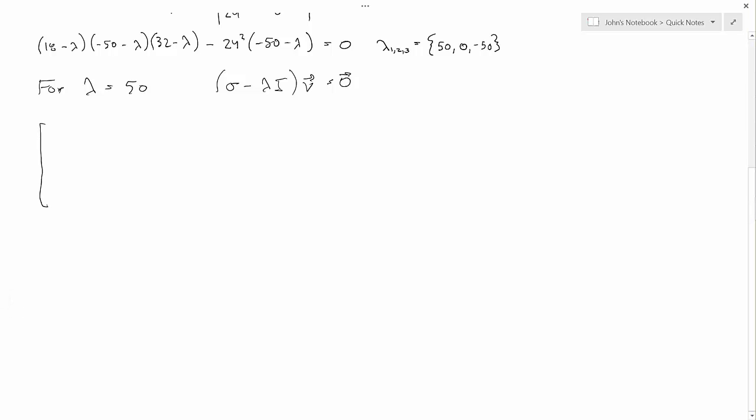We have 18 minus 50, zero, 24, zero, minus 100, zero, 24, zero, 32 minus 50. That's equal to minus 32, zero, 24, zero, minus 100, zero, 24, zero, minus 18. And of course, if we augment this with zero, zero, zero, this is the system of equations we're trying to solve.